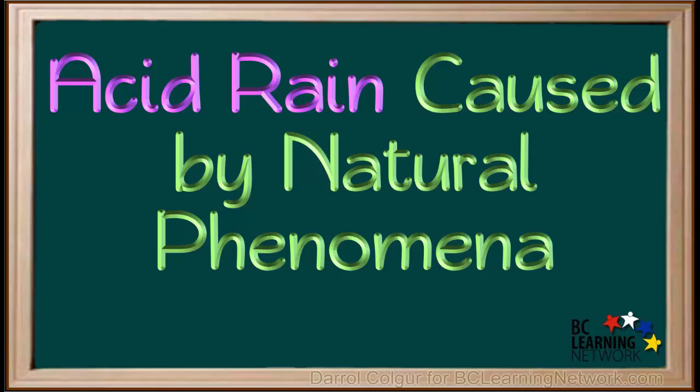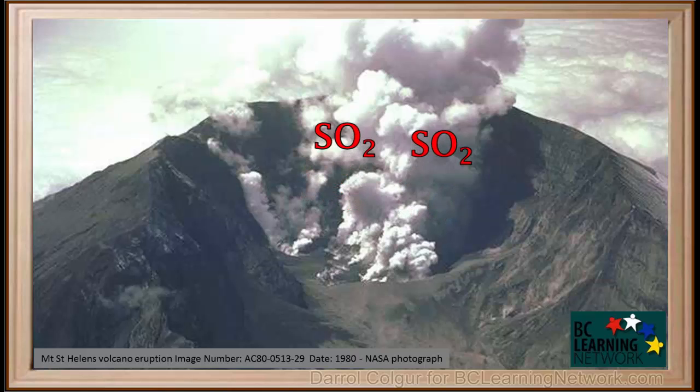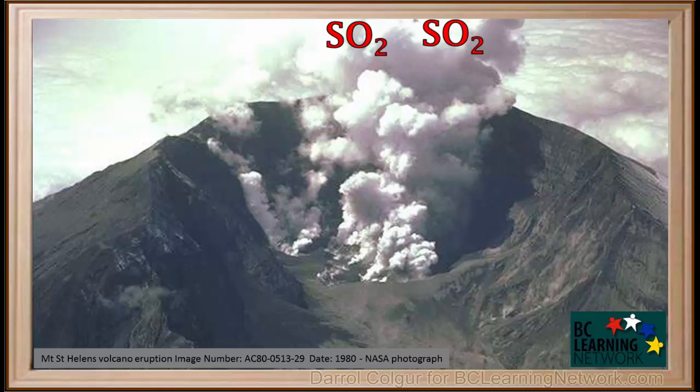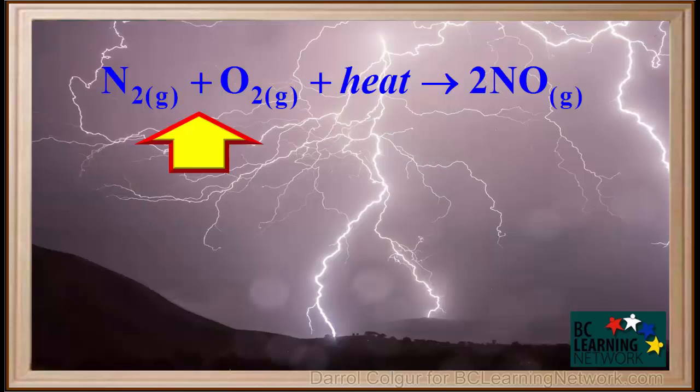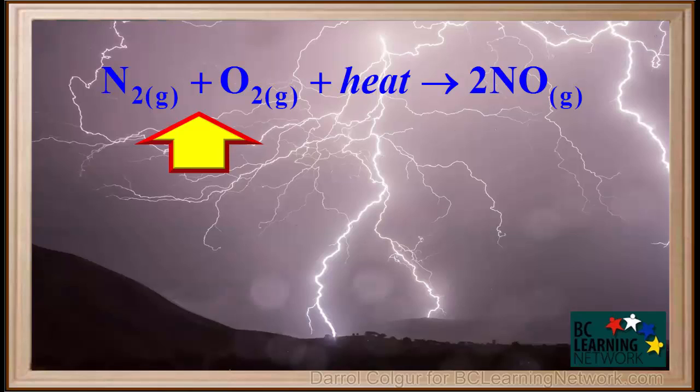Humans are not the only source of acid rain. It can also be caused by natural phenomena. Volcanoes can release large amounts of SO2 into the atmosphere. And the extreme localized heating caused by lightning can cause nitrogen and oxygen in the air to react and form nitrogen monoxide, which using the sequence of reactions we discussed, can cause acid rain.